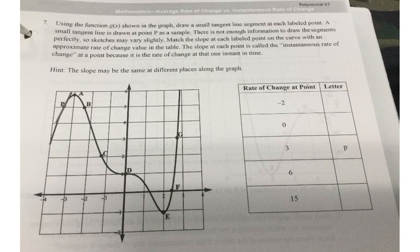For problem seven, using the function g(x) shown in the graph, draw a small tangent line segment at each labeled point. A small tangent line is drawn at point P as a sample. Match the slope of each labeled point on the curve with an approximate rate of change value in the table. The slope at each point is called its instantaneous rate of change because we're looking at the slope at one point. We know how to find the slope of a line if we're given two points. But for a tangent line, we're just finding the slope at one point, which is what makes it be an instantaneous rate of change. Let's just find the slope of each of these tangent lines. At point A it's a peak. So if I drew a tangent line, it would be a flat line. So its slope would be zero.